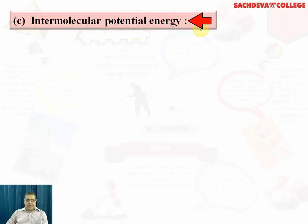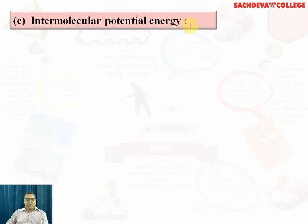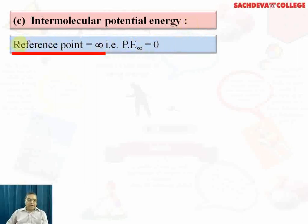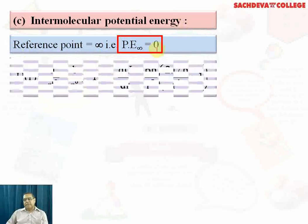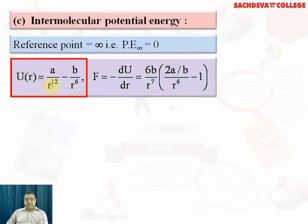Intermolecular potential energy is present in solids, which are made up of atoms and molecules. At separations of about 10⁻⁶ meters, molecules are strongly bound. The reference point is infinity, where potential energy is zero. The energy at distance r is given by the Lennard-Jones type function: U(r) = a/r¹² − b/r⁶.